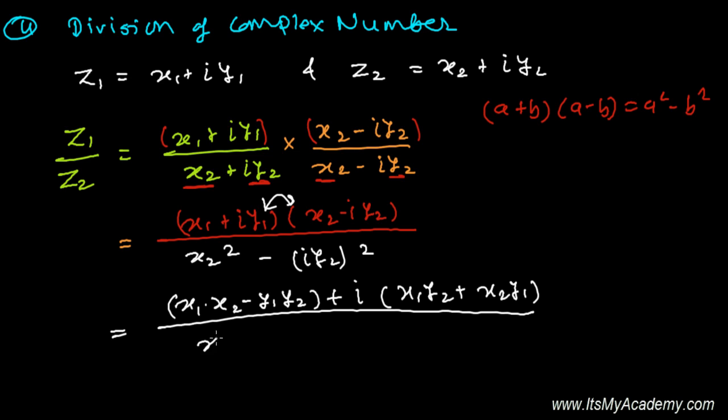In the denominator, it's x2² minus i²y2². The very good information for you is i² equals -1, so in the next step i² will be -1, and this minus will turn to positive.